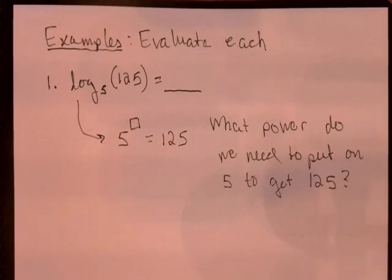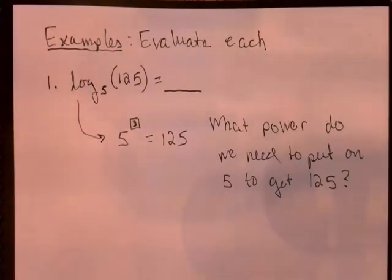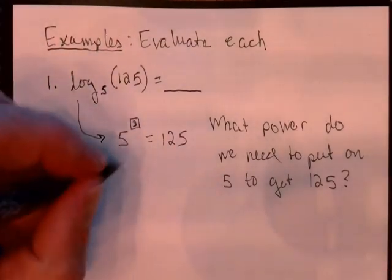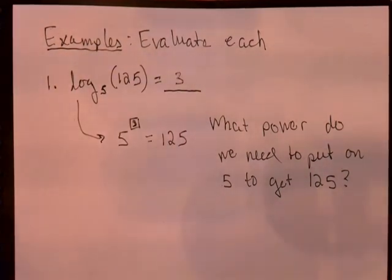What power do we need to put on 5 to get 125? So let's think about the powers of 5 that we know. 5 to the first is of course just 5. 5 to the second is 25. 5 to the third is in fact 125. So if I put a 3 in that box, I get a true statement down here. And that's how I fill in the blank up there. Let's do a couple more here.